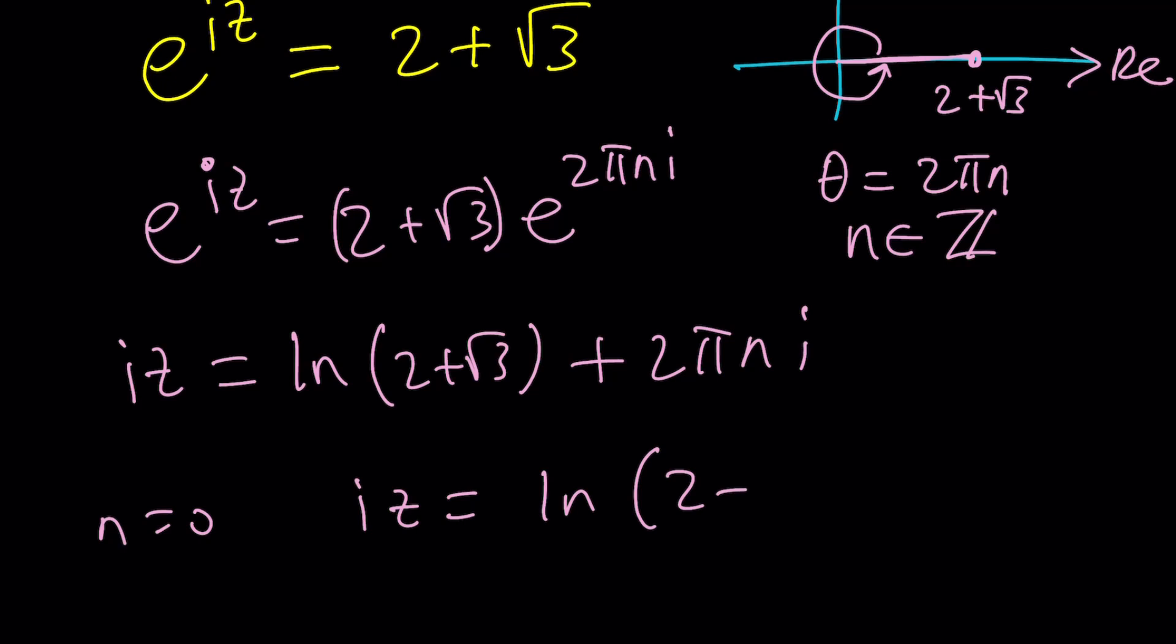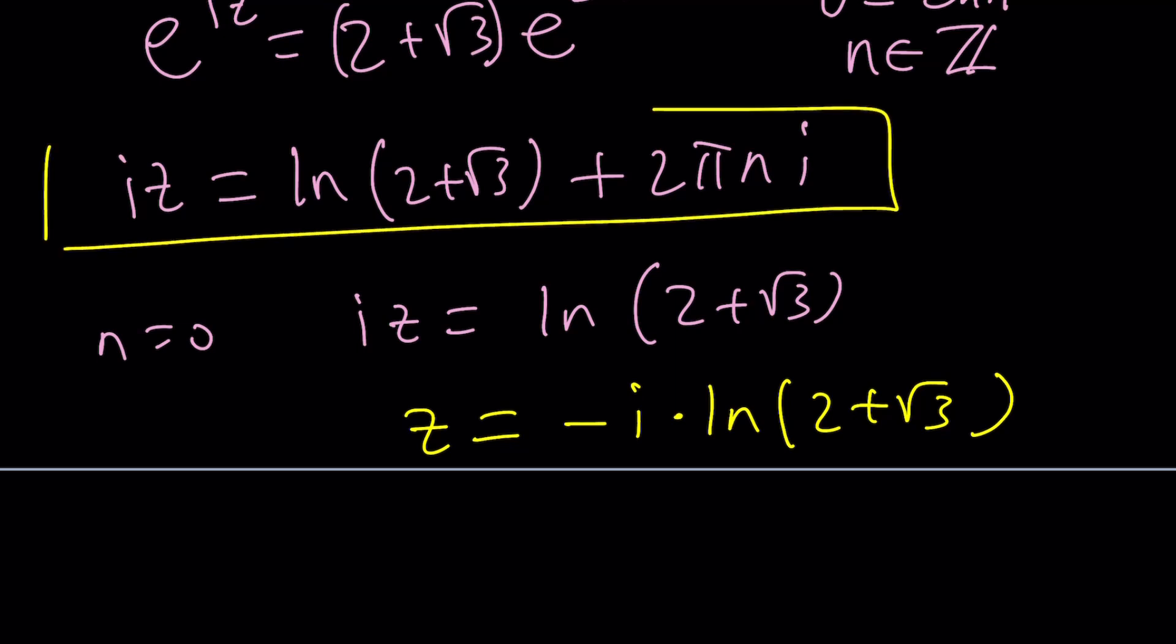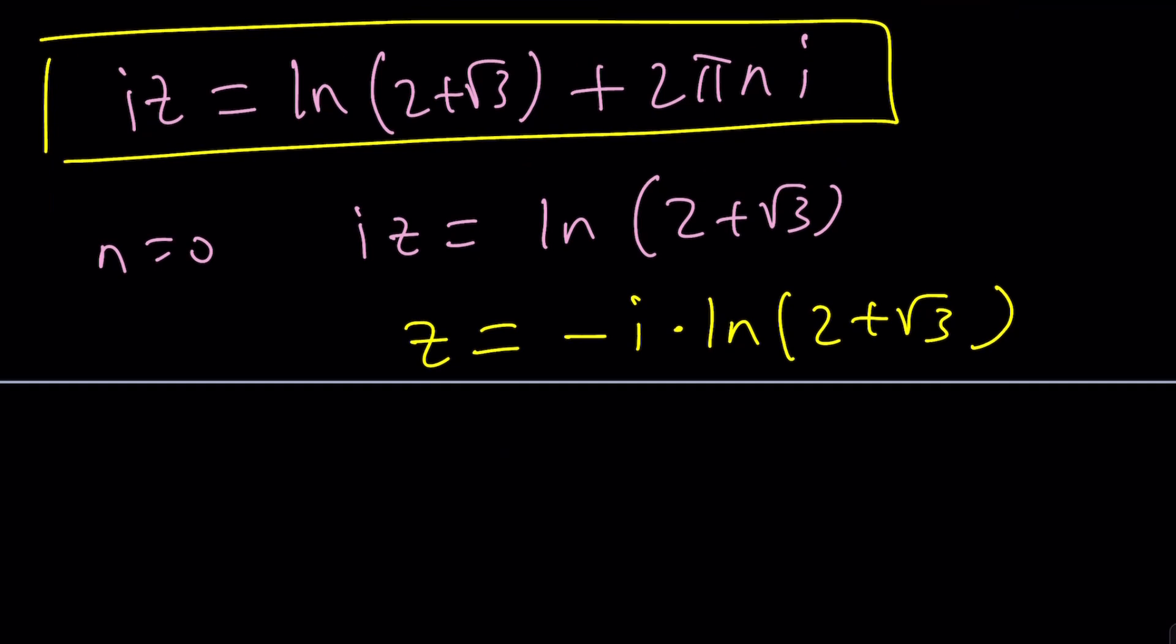Now, if n is equal to zero, you get the principal value. And you can evaluate it real quick from here. Just multiply both sides by negative i. From here, z is going to be negative i times ln two plus root three. And if you plug it in, this should work. And what about the other solutions? This is the general solution. But we need to multiply both sides by negative i again. So that's going to give us, we're going to get a negative i squared, which is positive one. So we're going to get two pi n minus i times ln two plus root three.